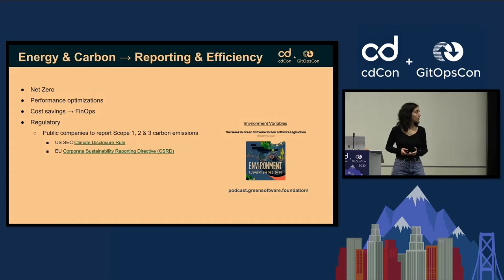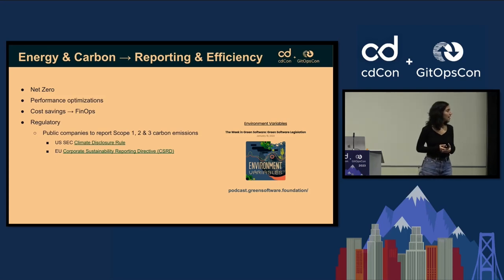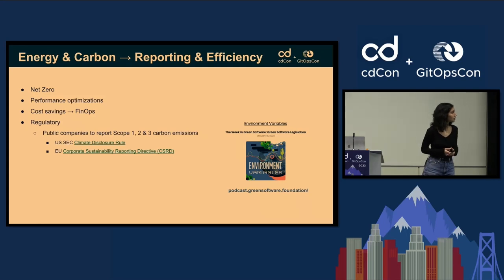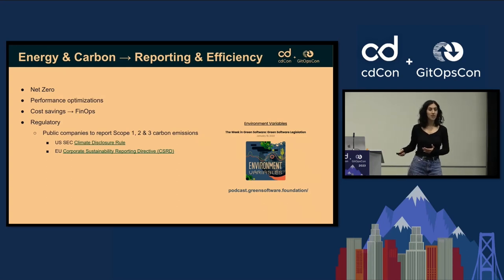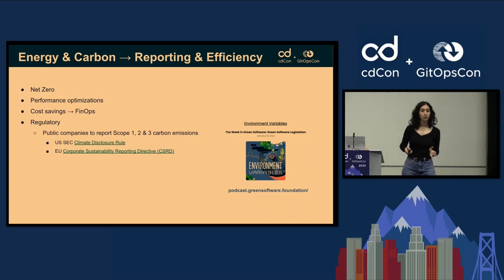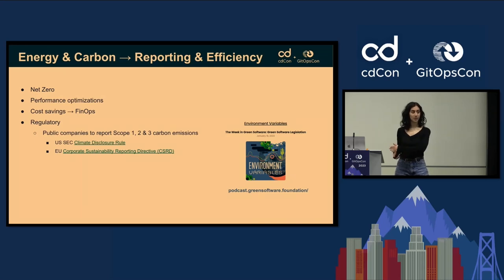In the US, the Securities and Exchange Commission, the SEC, has an upcoming rule called the Climate Disclosure rule, which will require publicly traded companies to report on their carbon emissions — Scope one, Scope two, and Scope three. That's direct, indirect, and embedded emissions.